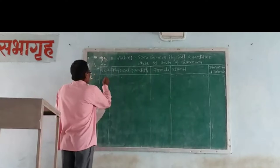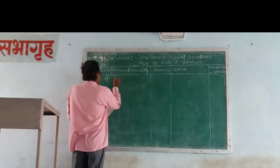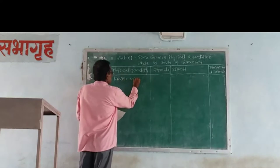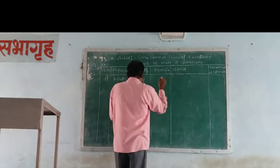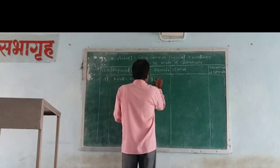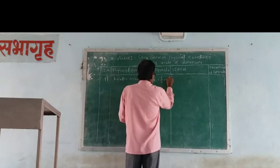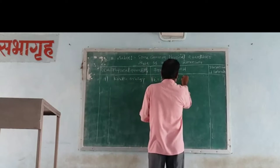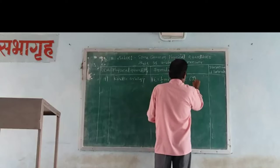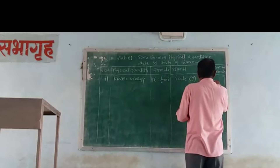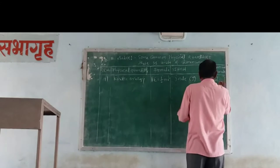Number 7, kinetic energy. The formula is kinetic energy equal to half m v squared. The unit is Joule, and the dimensions are L2 M1 T minus 2.